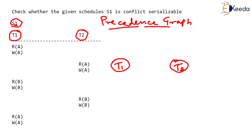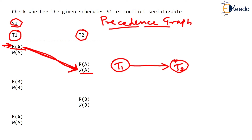Now we look at the conflicting operations occurring in the schedule. Starting with T1: read A conflicts with write A — same data item A, one reading and one writing. This conflict goes from T1 to T2, since read occurs first in T1 and write occurs later in T2. So we show a directed edge from T1 to T2. The next conflicts — write A with read A, and write A with write A — are also from T1 to T2, so the edge is already shown and we don't draw multiple edges.